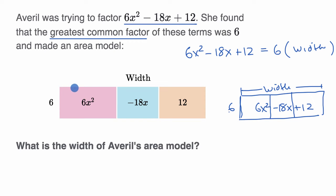And what's useful about this is we could think about the widths of each of these sub areas, and then we can add them together to figure out the total width. So what is the width of this pink section right over here? Well 6 times what is 6x²? Well 6 times x² is 6x². So the width here is x².